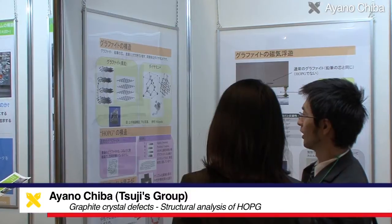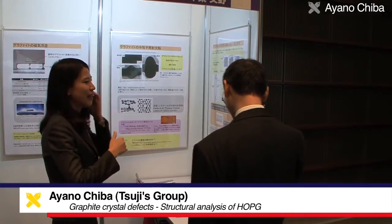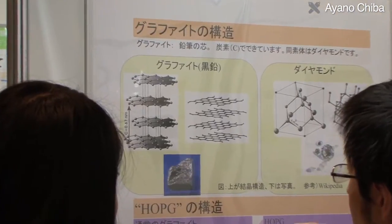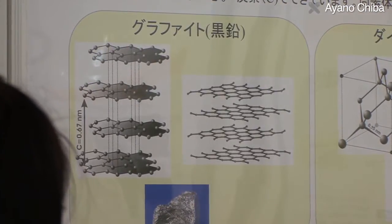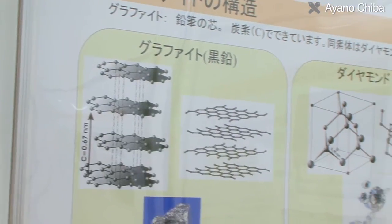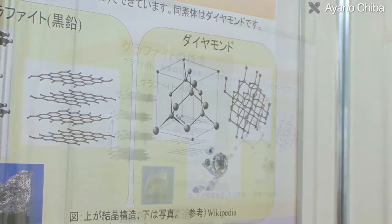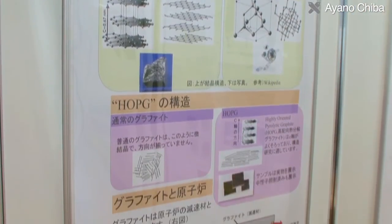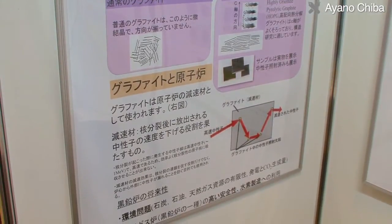At Keo Techno Mall in December 2009, there was an exhibit on graphite crystal defects by Assistant Professor Chiba from the Tsuji Laboratory in the Department of Physics. Graphite, also known as black lead, is a form of carbon like diamond but with a different structure. It is familiar from its use in pencils but also used as a moderator in nuclear reactors.